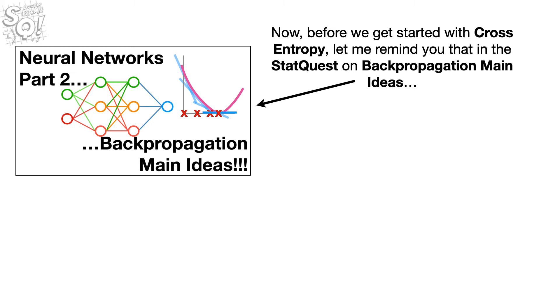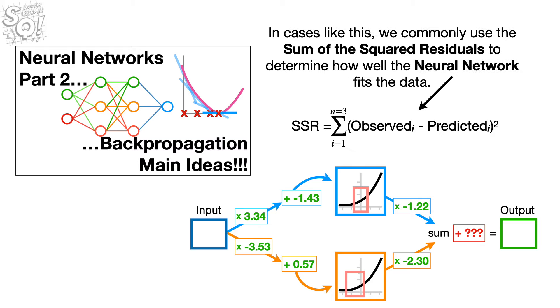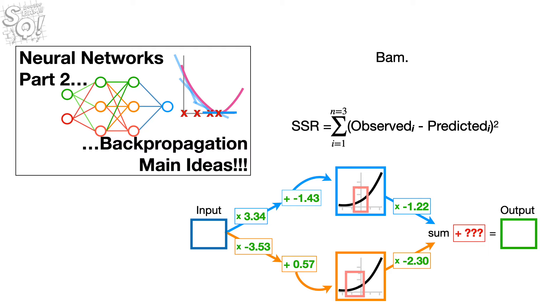Now, before we get started with Cross Entropy, let me remind you that in the StatQuest on Backpropagation Main Ideas, we had a simple neural network with a single output that, in theory, could give us any output value. In cases like this, we commonly use the sum of the squared residuals to determine how well the neural network fits the data.